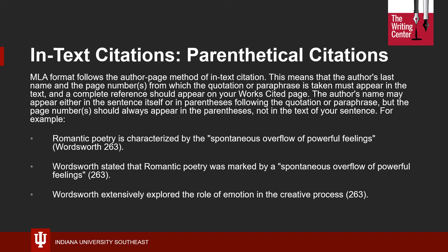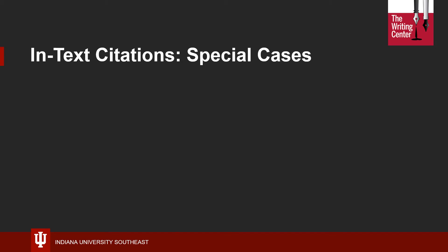Be sure that each of your in-text citations directly corresponds to a complete reference on your works cited page. If you have a single author, you will merely need to provide the author's last name and page number for your in-text citations. There are many times, though, when a single author is not the only one listed, or even cases where you may not have an author listed at all. If you have multiple authors, the way you format the in-text citation depends on how many. If two are listed, simply provide both names in the order they are listed on the source, separated by the word AND in MLA. As always, you will then provide the page number.